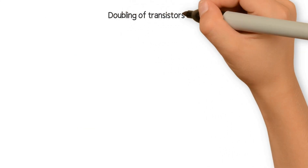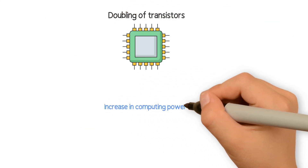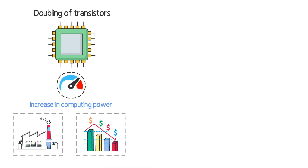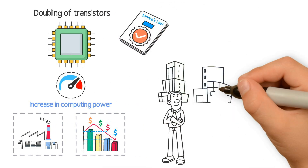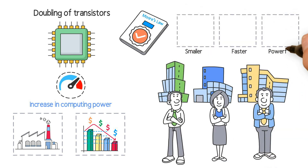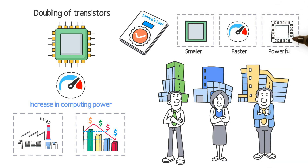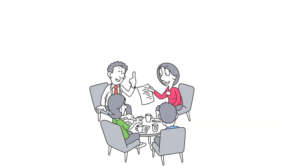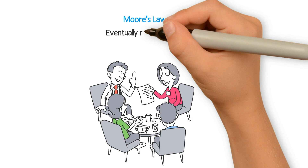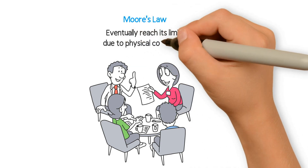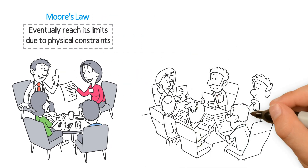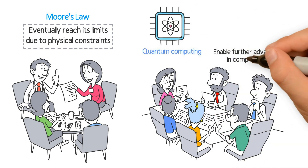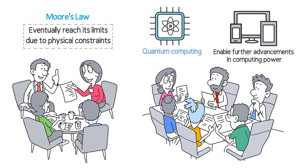The doubling of transistors on a chip leads to an increase in computing power while the cost of production decreases. Moore's Law has been the driving force behind the development of smaller, faster and more powerful computer chips. While some experts believe that Moore's Law will eventually reach its limits due to physical constraints, others believe that new technologies such as quantum computing will enable further advancements in computing power.